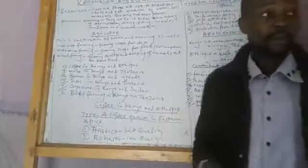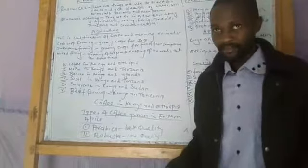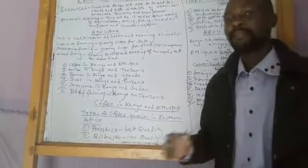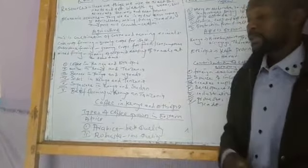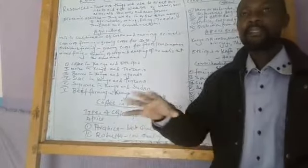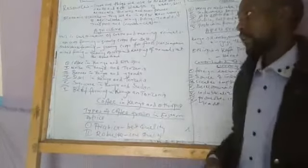In our lesson today we will only focus on agriculture in Eastern Africa. What is agriculture? Agriculture is the cultivation of crops and rearing animals. That is keeping of animals and growing of crops.